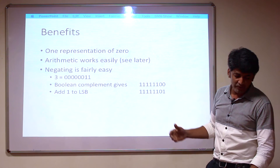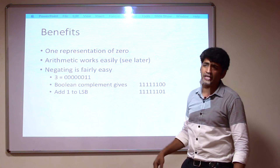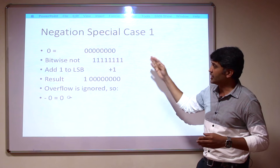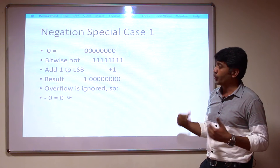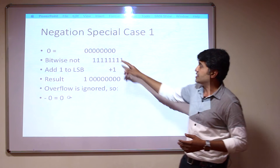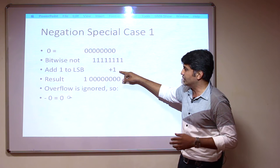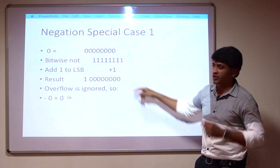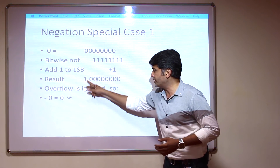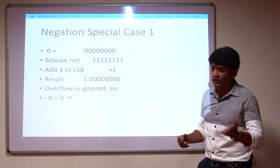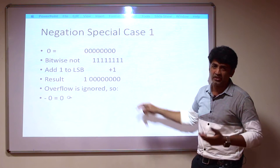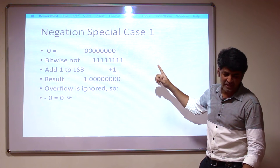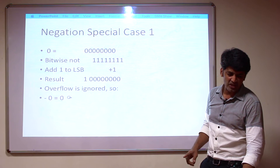The next two slides cover the negation special cases. Special case 1: if you want to represent 0 and take minus 0, take the bitwise complement, then add 1 to the least significant bit. The overflow bit that results is ignored, and you still get 0. So minus 0 and plus 0 give the same representation.